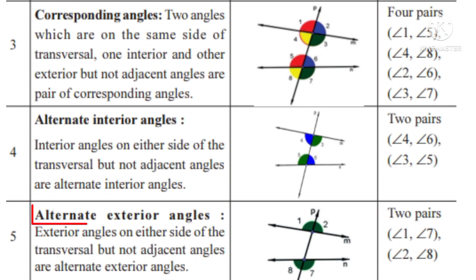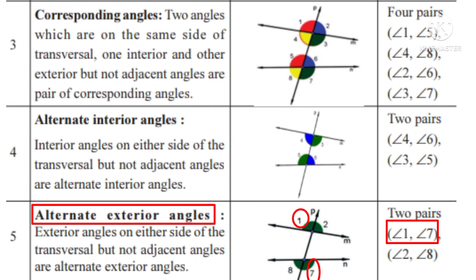Number 5: alternate exterior angles. Alternate means on either side; exterior means outside angles. The angles which lie on either side of the transversal but they are exterior. One pair is angle 1 and angle 7; another pair is angle 2 and angle 8.